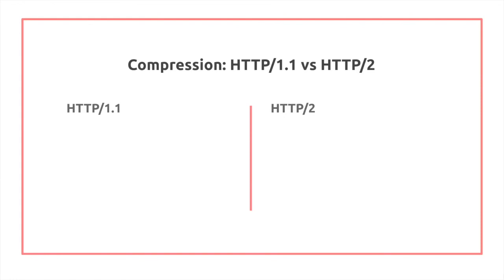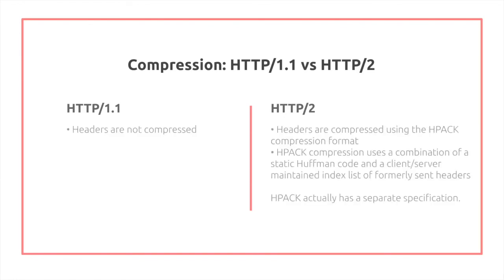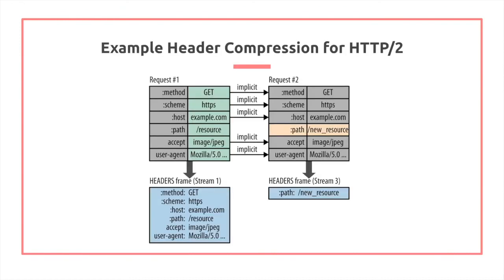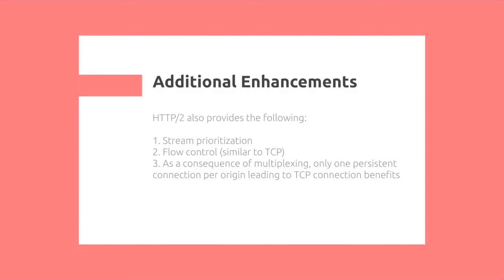Data compression of headers — there will be a separate video specifically about this. In HTTP 1.1, headers are not compressed, while in HTTP/2 they use the HPACK compression format, which has a separate specification. This avoids sending any headers that were previously sent. The server and client will maintain state to track this.